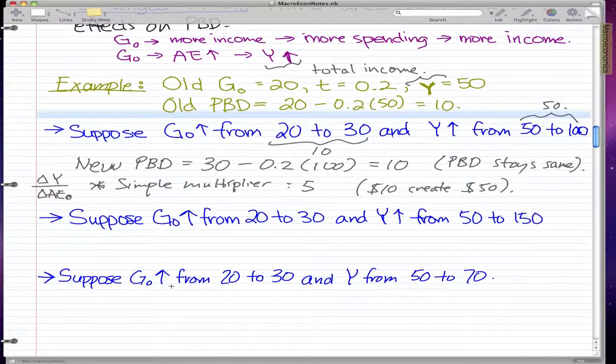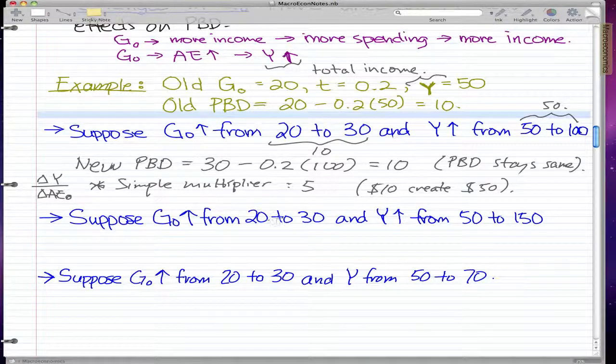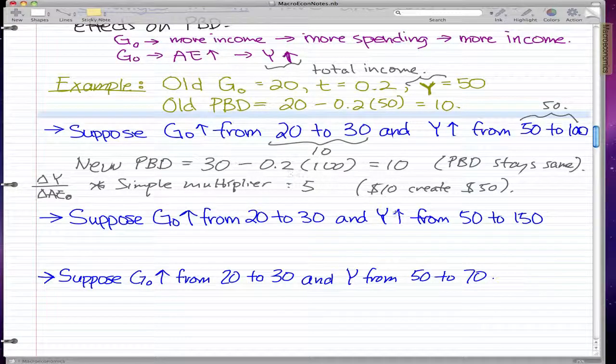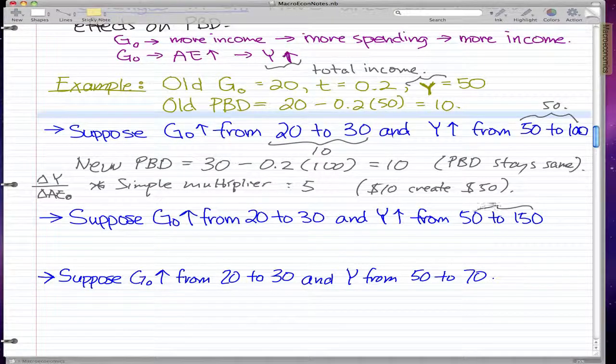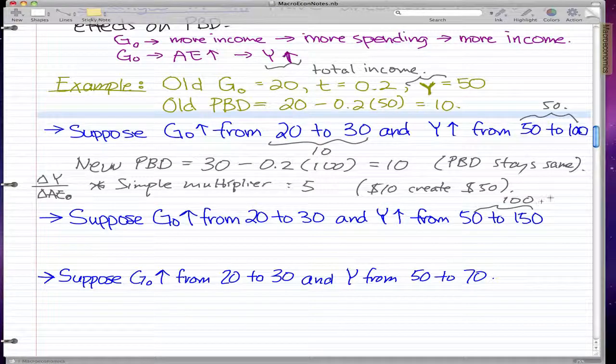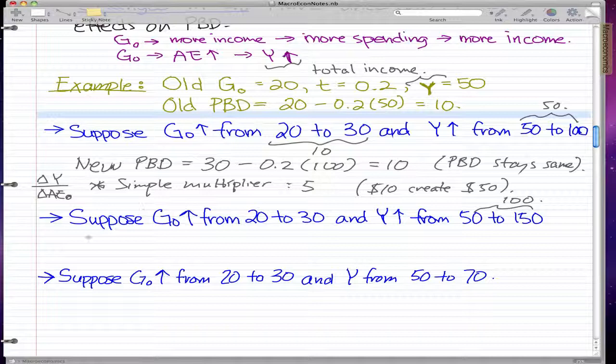Now the second example. Suppose that the government increased their spending from 20 to 30, like the last example, and Y increased from 50 to 150, so there's a change of 100.